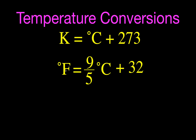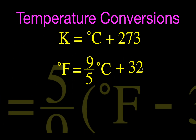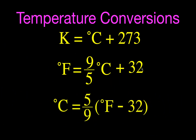The second equation converts between degrees Celsius and degrees Fahrenheit: degrees Fahrenheit equals degrees Celsius times nine divided by five, plus 32. You have to do the multiplication first and then add 32 to get the temperature in Fahrenheit.